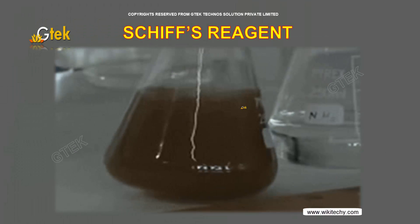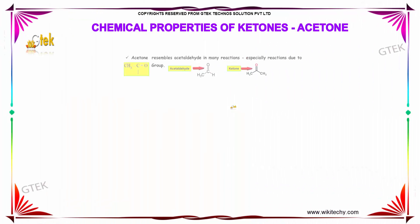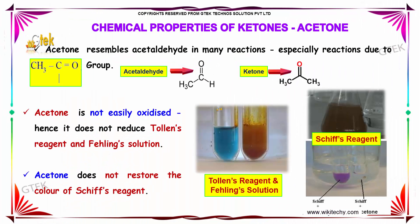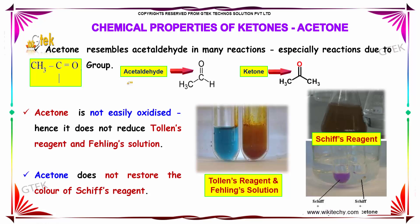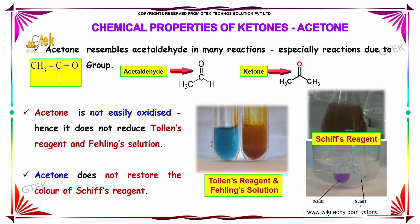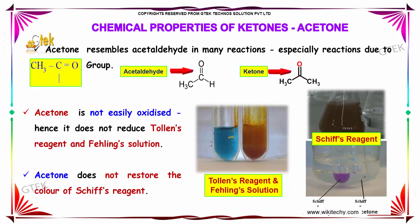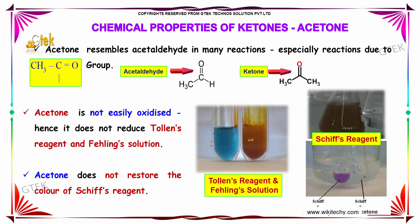Schiff's reagent. Acetone resembles acetaldehyde in many reactions, especially reactions due to the CH3C=O group. Acetone is not easily oxidized; hence, it does not reduce Tollens' reagent and Fehling's solution. This is the Tollens' reagent, and the brownish-red one is known as Fehling's solution. Therefore, acetone does not restore the color of Schiff's reagent.